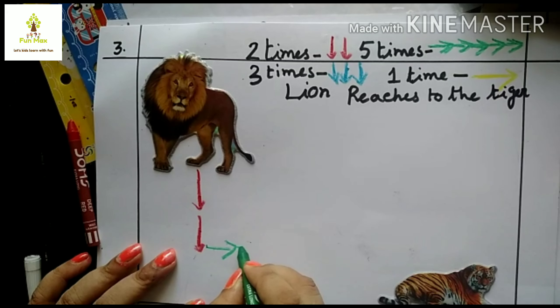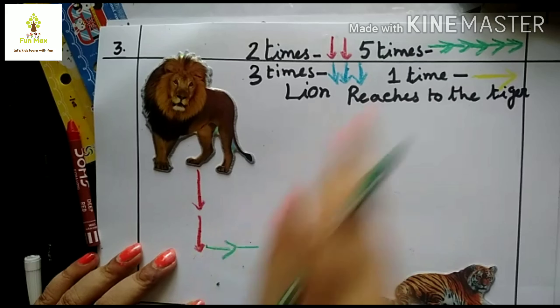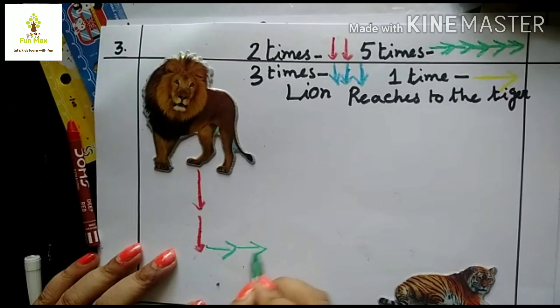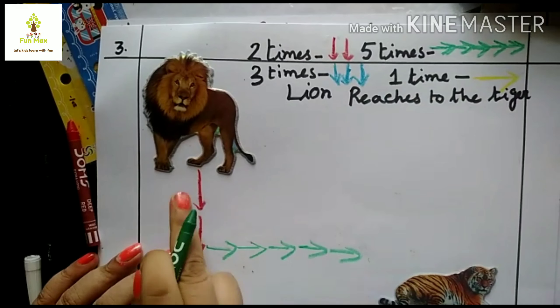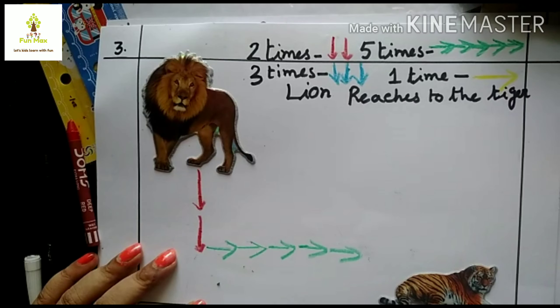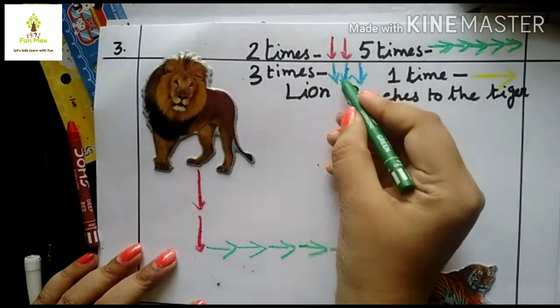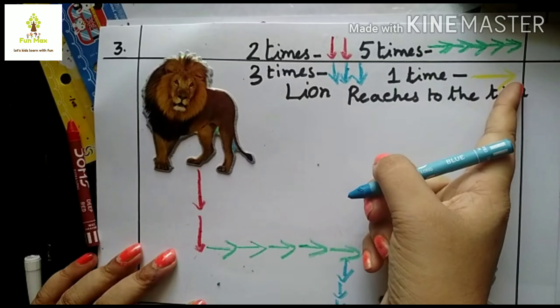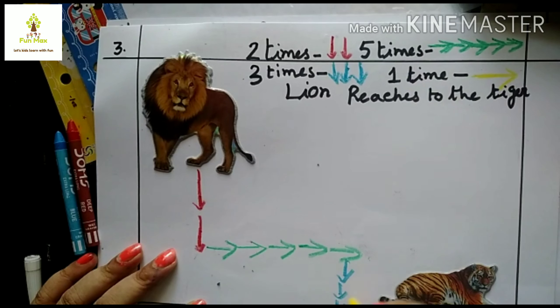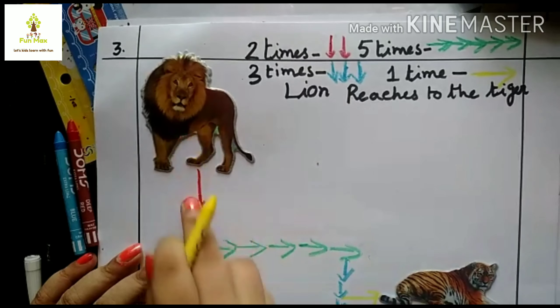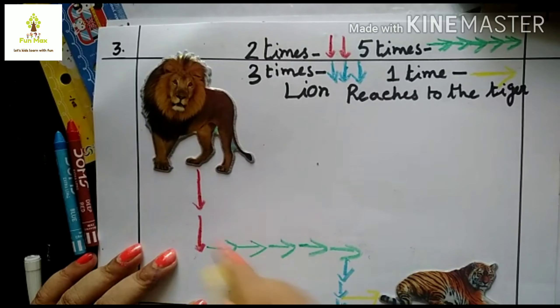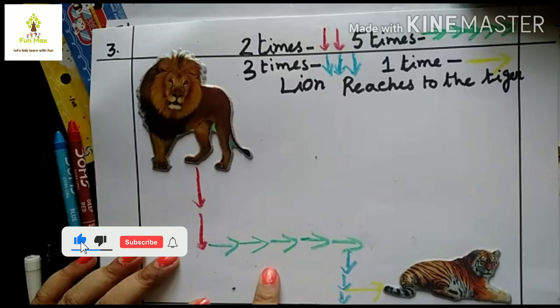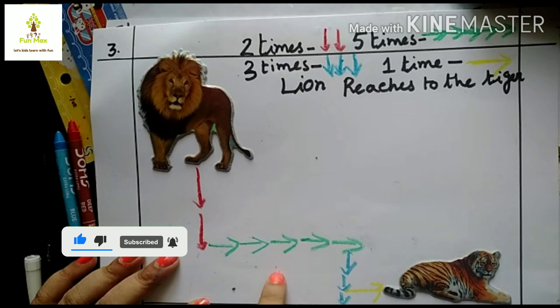In one worksheet there is multiple purpose you can fill it. Multiple purpose, and you can help your child. Five times arrow, two times down, five times right directions, three times. And lion reaches up to the tiger and makes a friendship. And this is the way of directions and fun activity, challenging activity, and of course it is a great coding activity.